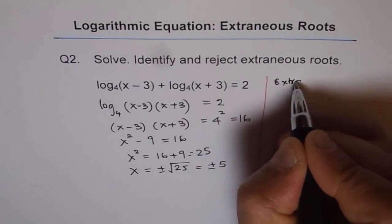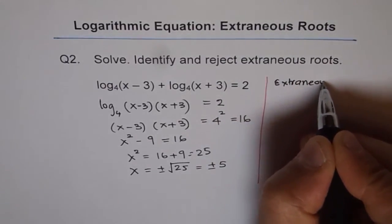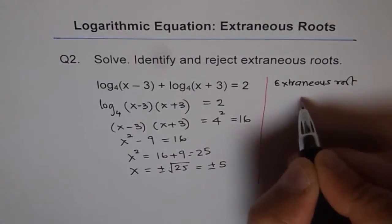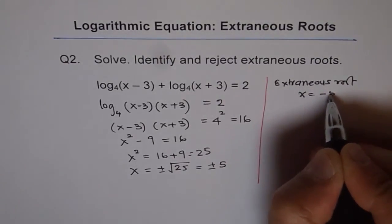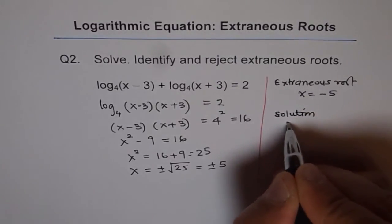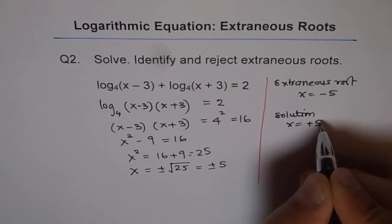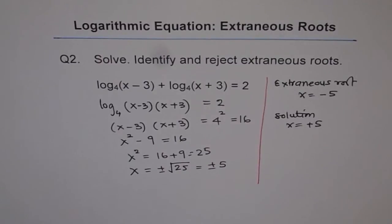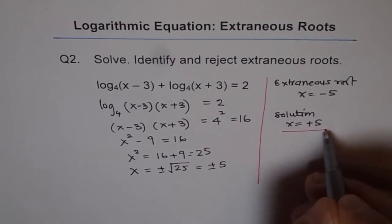Our extraneous root is at x = -5, and the real solution is at x = +5. So that is the real solution for the given equation.